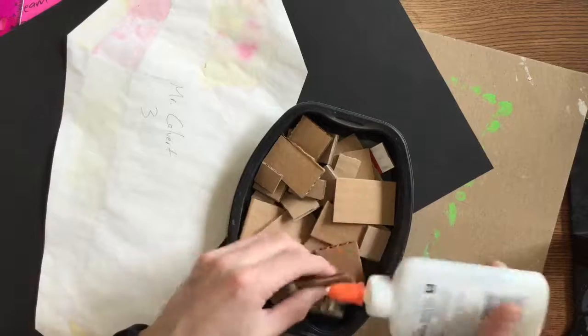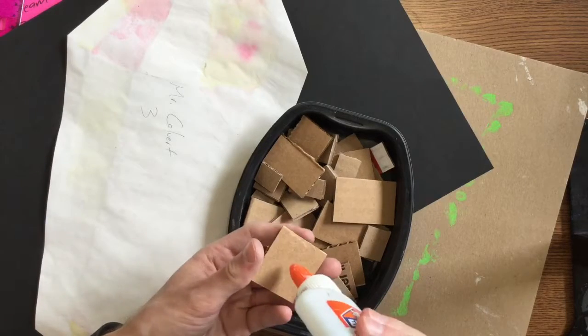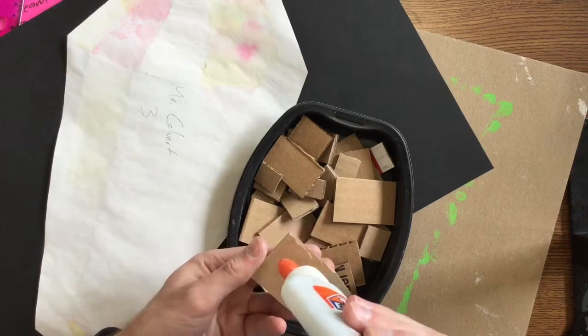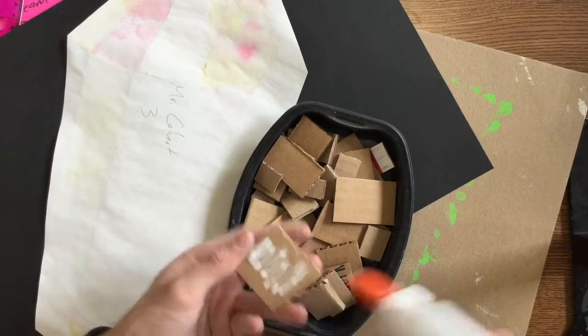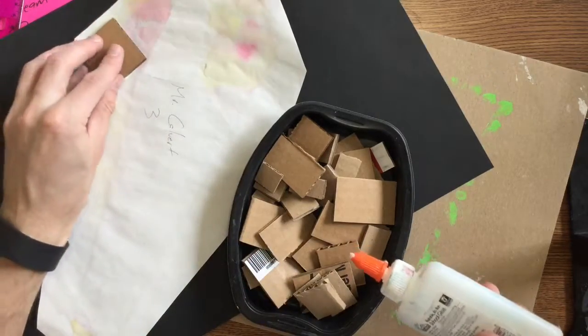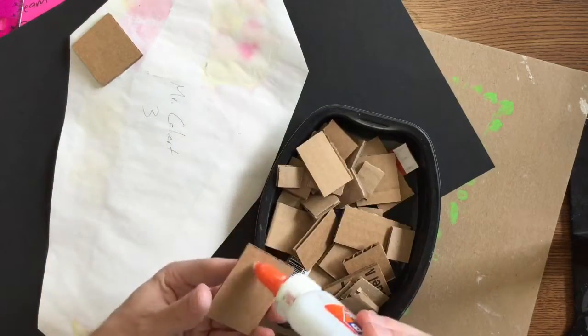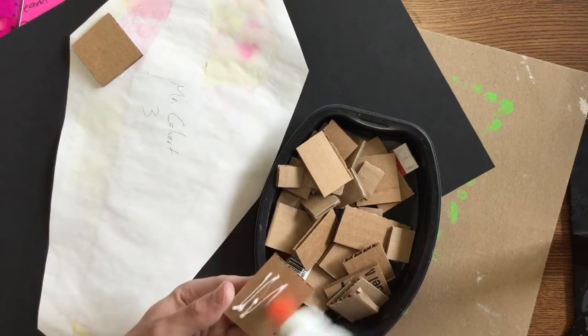So you should have some cardboard at your table. All it takes is a little squiggle of glue. I would use more than a dot today, something like this. And just place them around the edge and maybe a couple in the middle too.